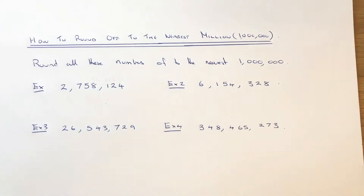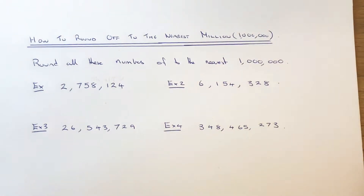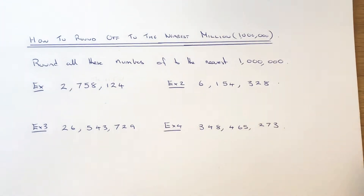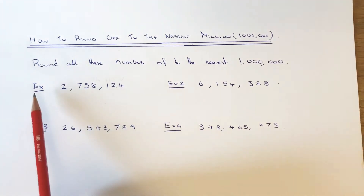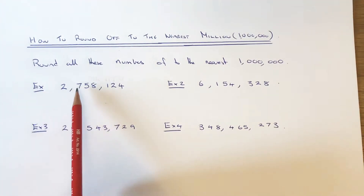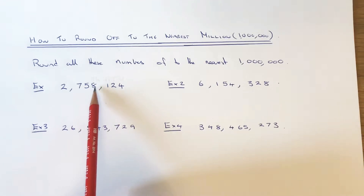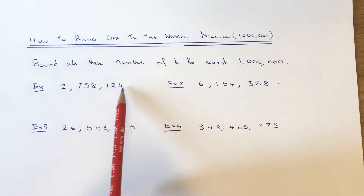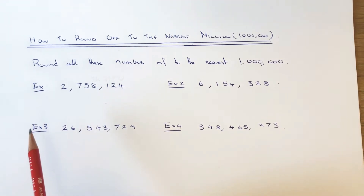Hi guys, I'm going to show you how to round any number off to the nearest 1 million. Let's have a look at our examples. In example one, we've got to round 2,758,124 to the nearest million.